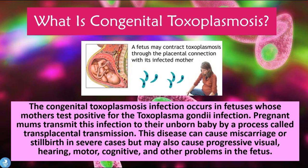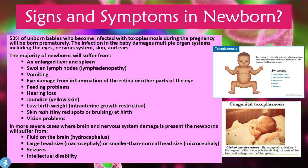50% of unborn babies who become infected with toxoplasmosis during the pregnancy will be born prematurely. The infection in the baby damages multiple organ systems including the eyes, nervous system, skin, and the ears. The majority of newborns will suffer from an enlarged liver and spleen, called hepatomegaly and splenomegaly. The baby will also present with swollen lymph nodes, called lymphadenopathy, vomiting, eye damage from inflammation of the retina or other parts of the eye, feeding problems, and hearing loss.